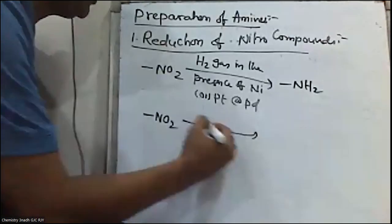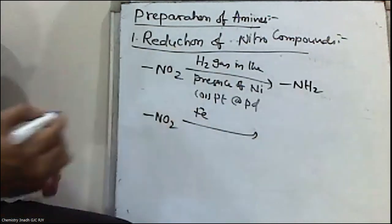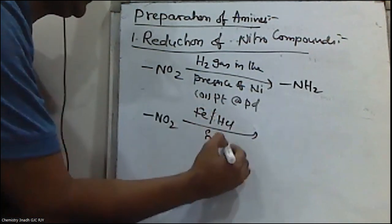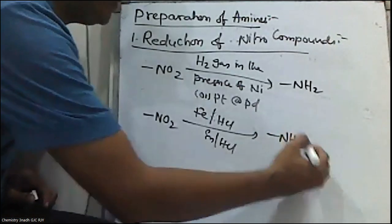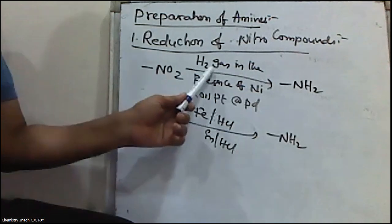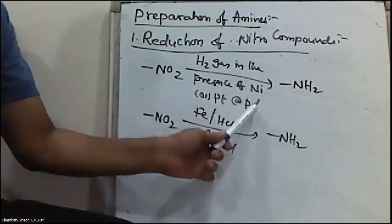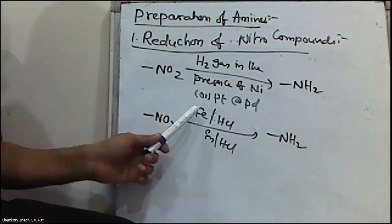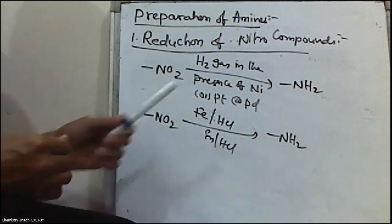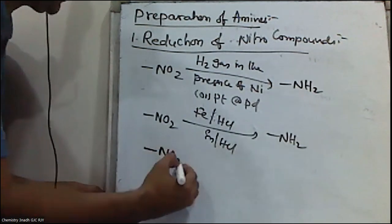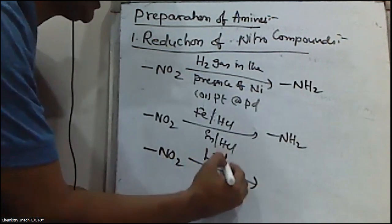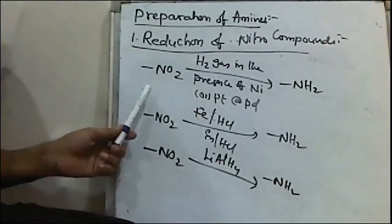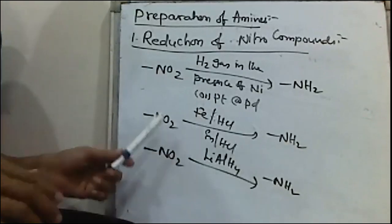This reduction reaction can also be carried out by using metals in acidic medium, such as iron with HCl or tin with HCl, to form amines. This reaction can also be carried out using reducing agents such as lithium aluminium hydride. Nitro compounds are reduced to amines.